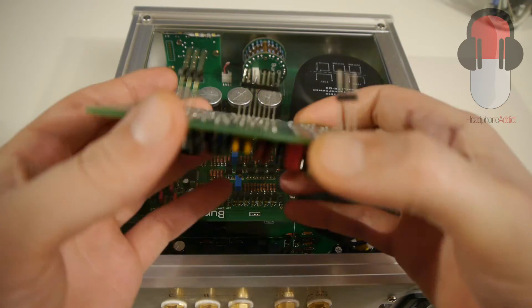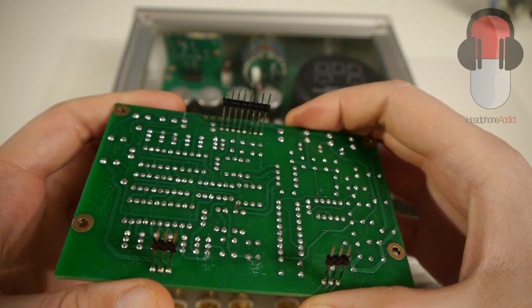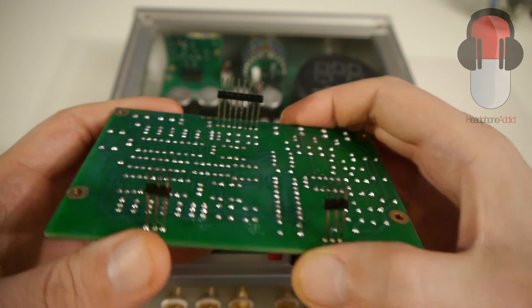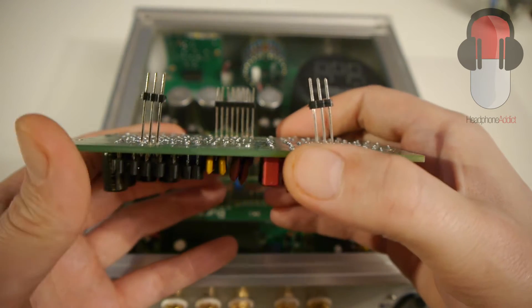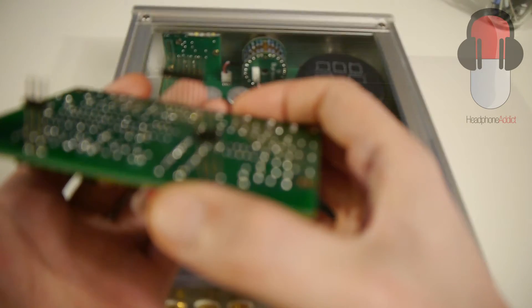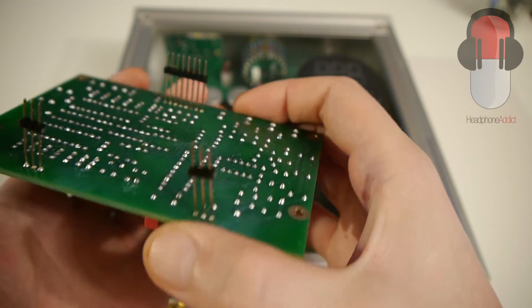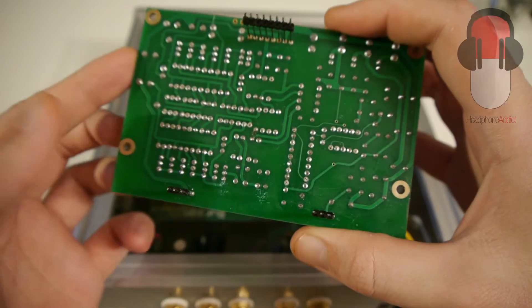I'm going from the 9018 DAC PCB with the Sabre chip to the 1793 Burr Brown chip, which is supposed to sound a little bit more analog, as the audiophile cliche goes.